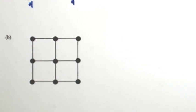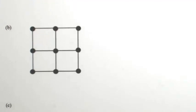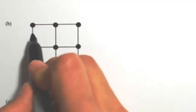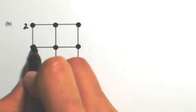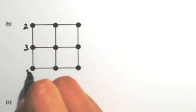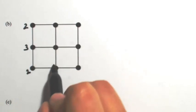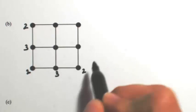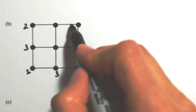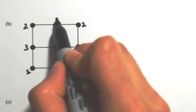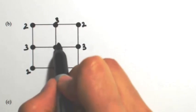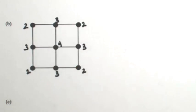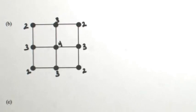Looking at the next example, we'll do the same thing — start by looking at all of the degrees. So at the top left we have a two, and traveling around: three, two, three, two, three, two, three. And in the middle we have a four. So again, this does not have an Euler circuit because we have some odd degrees.